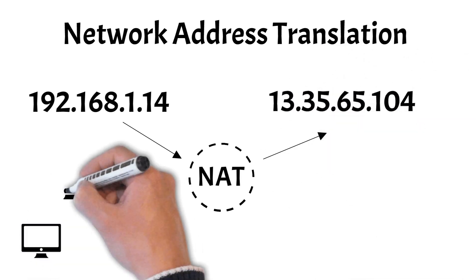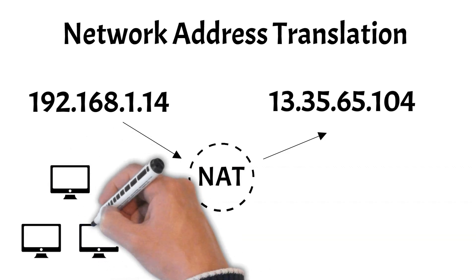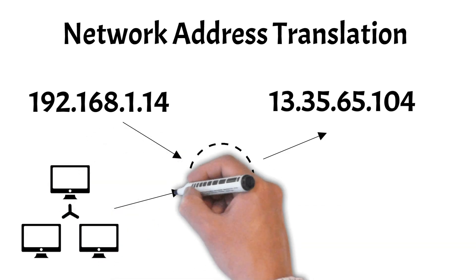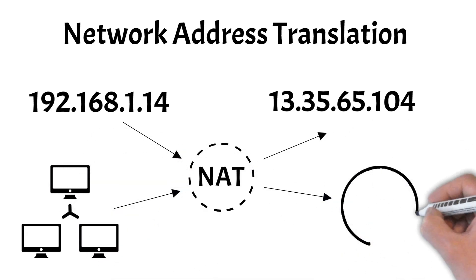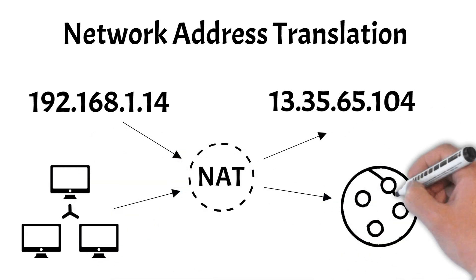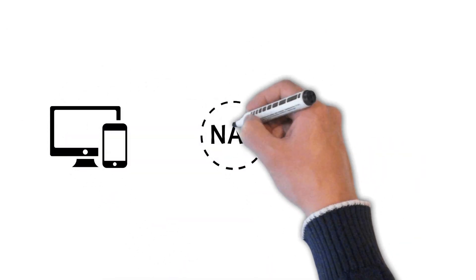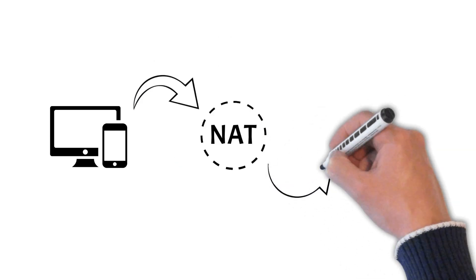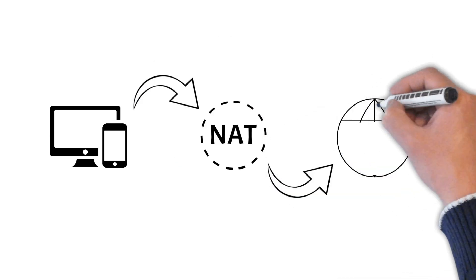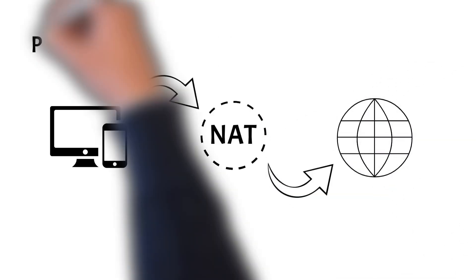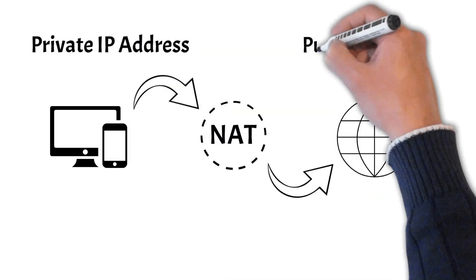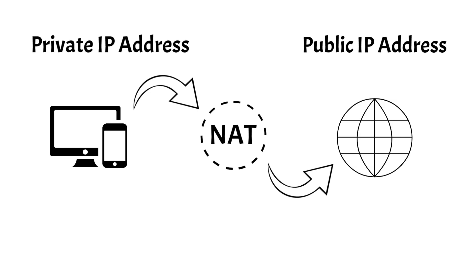You can think of it as an interface between your local network and the global network. When a device on your local network wants to communicate with the internet, NAT modifies the outgoing data packets to include the public IP address assigned by your ISP. This way, the data can traverse the public internet and reach its destination.